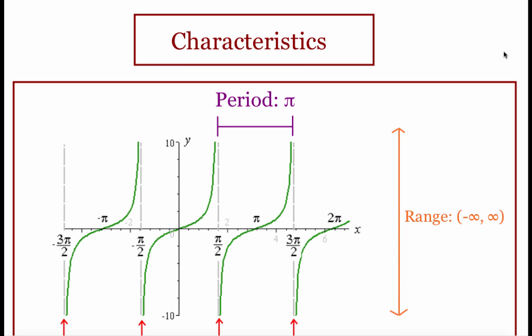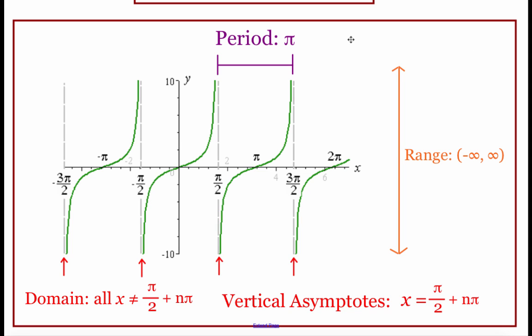Looking at some general characteristics of tangent functions — a few things are different from sine and cosine. The period for a tangent graph is just pi, whereas sine and cosine had a period of 2 pi. The range is negative infinity to positive infinity, so all y values appear. There are domain issues because of the asymptotes. For the general tangent, the domain is all x values not equal to pi/2 + n·pi, because that's where the x-coordinate is 0 and the denominator of the fraction becomes 0. Vertical asymptotes happen everywhere there's a domain issue.